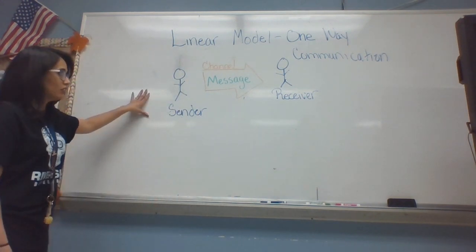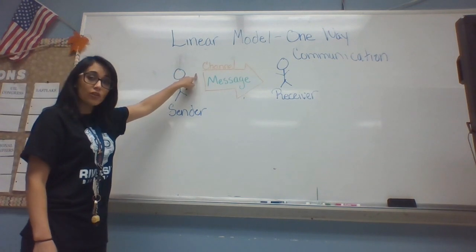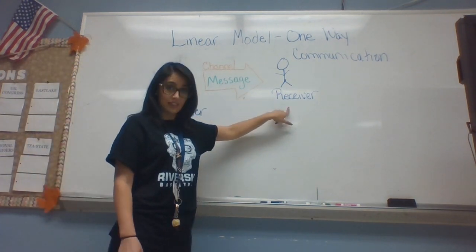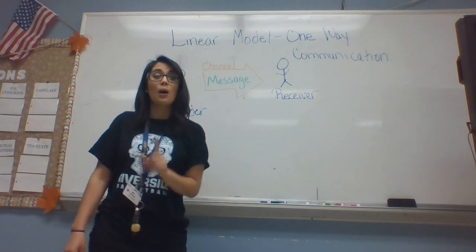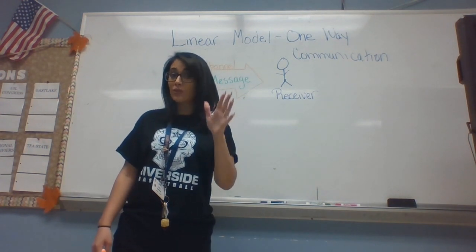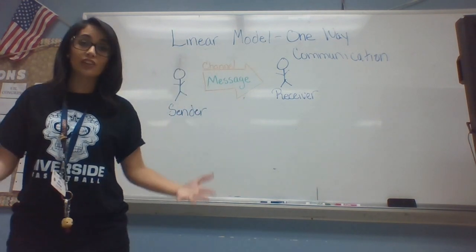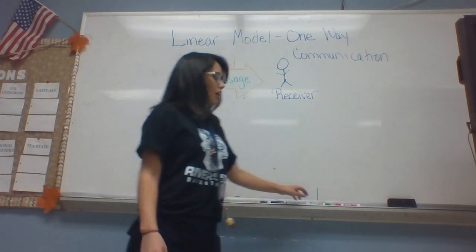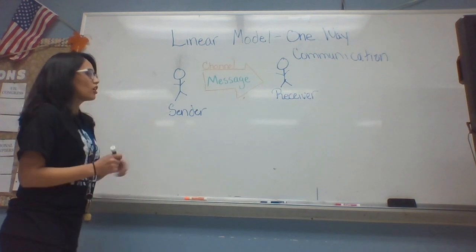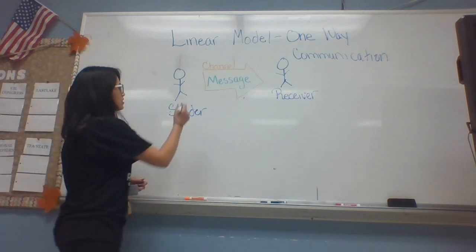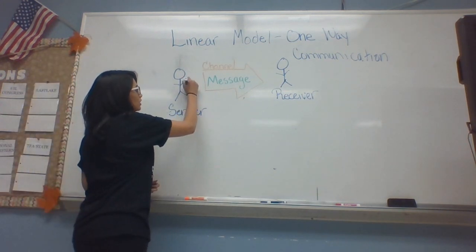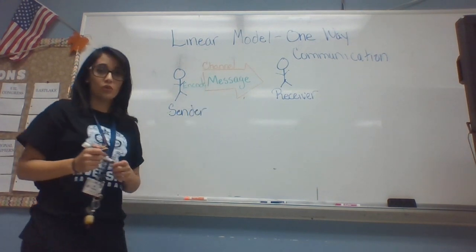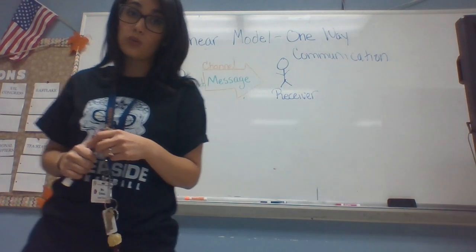So in this model, you have a sender who decides how they're going to send a message, and the receiver gets it. But before the receiver can receive anything and before the sender can send anything, they first have to create a message. The process of creating a message is called encode — E-N-C-O-D-E — which is in your notes.